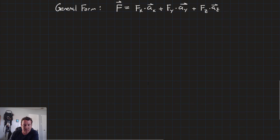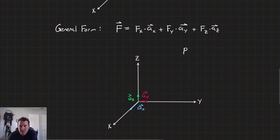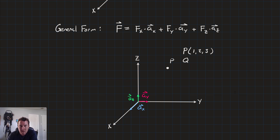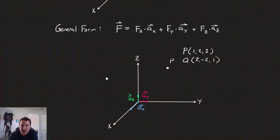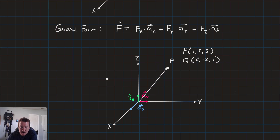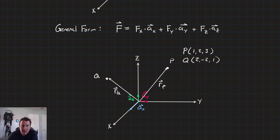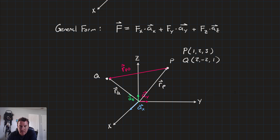Let's do one more example. Now we have two points: point P at (1, 2, 3) and a point Q at (2, -2, 1). We have vectors r sub P and r sub Q that each connect the origin to those points. What if we wanted to find a vector r sub PQ that connects the two?